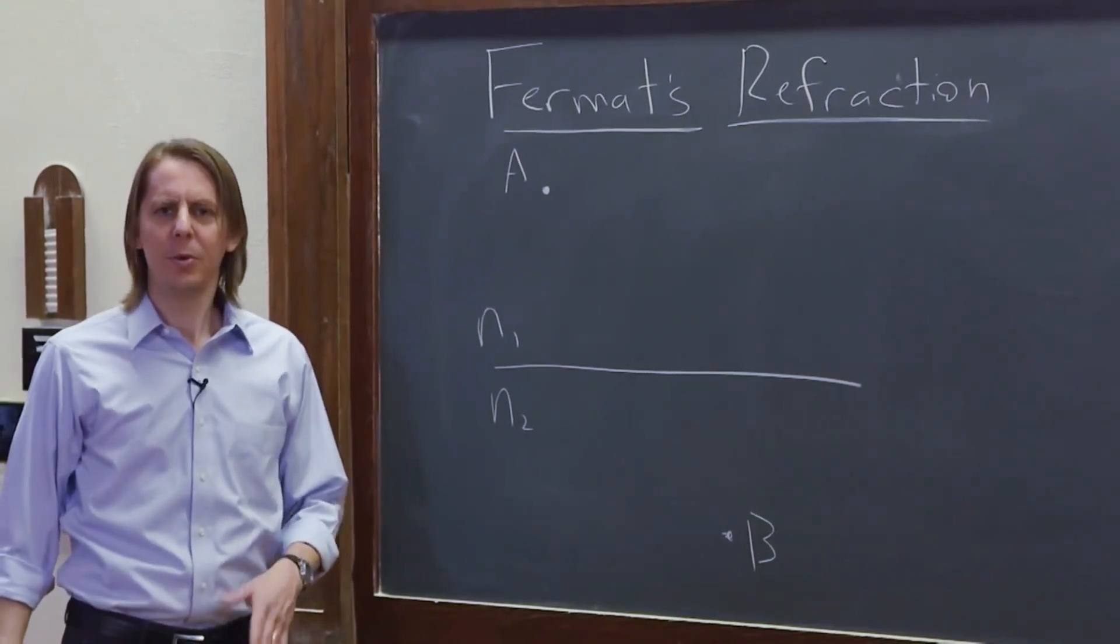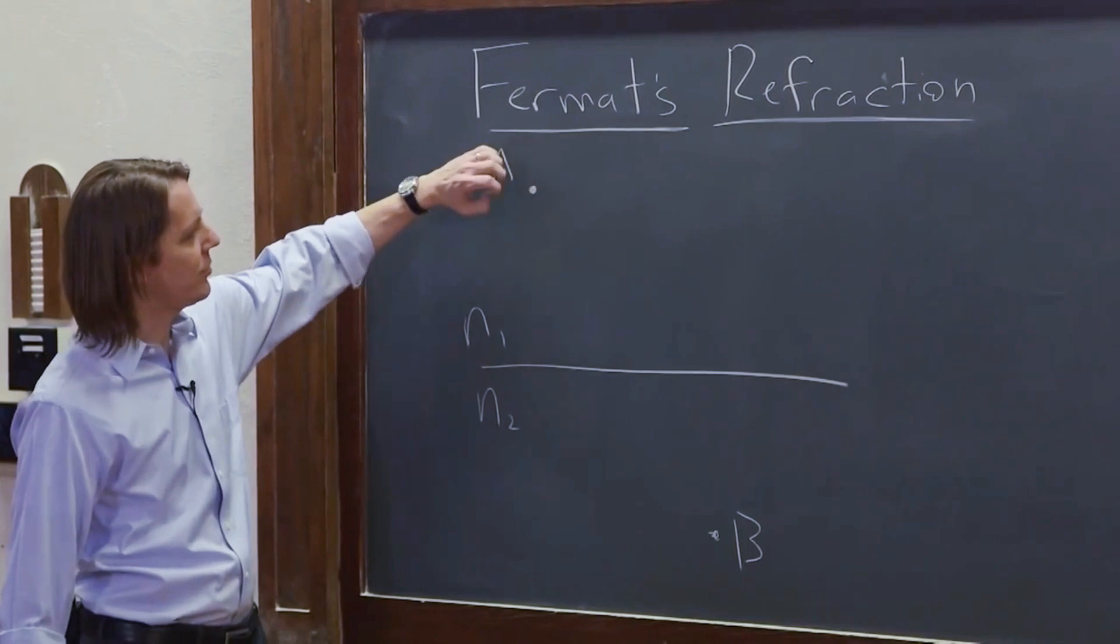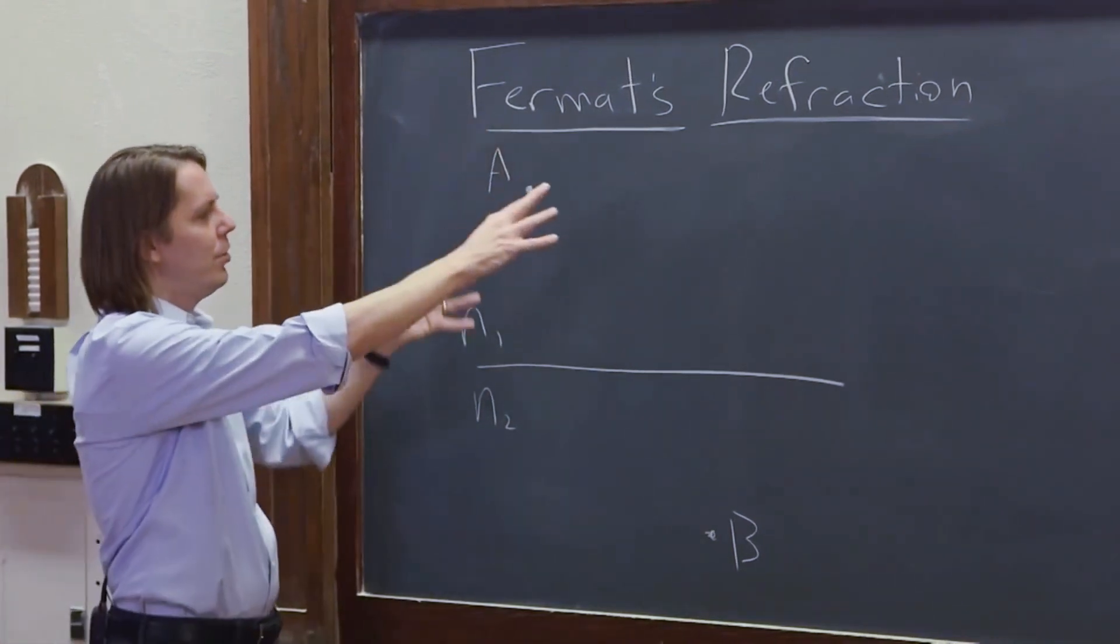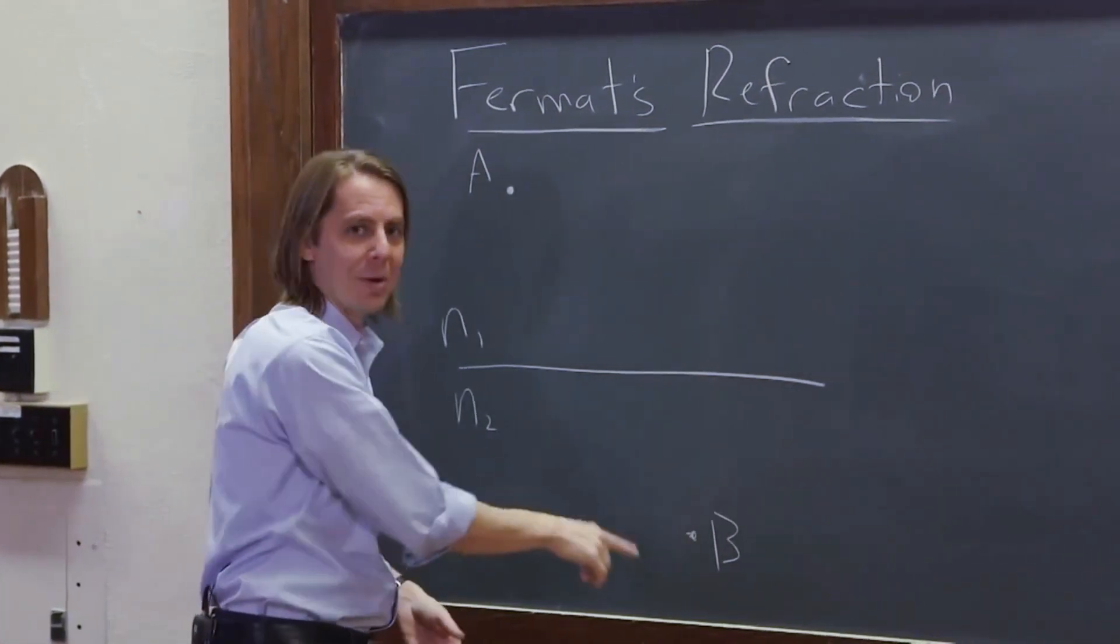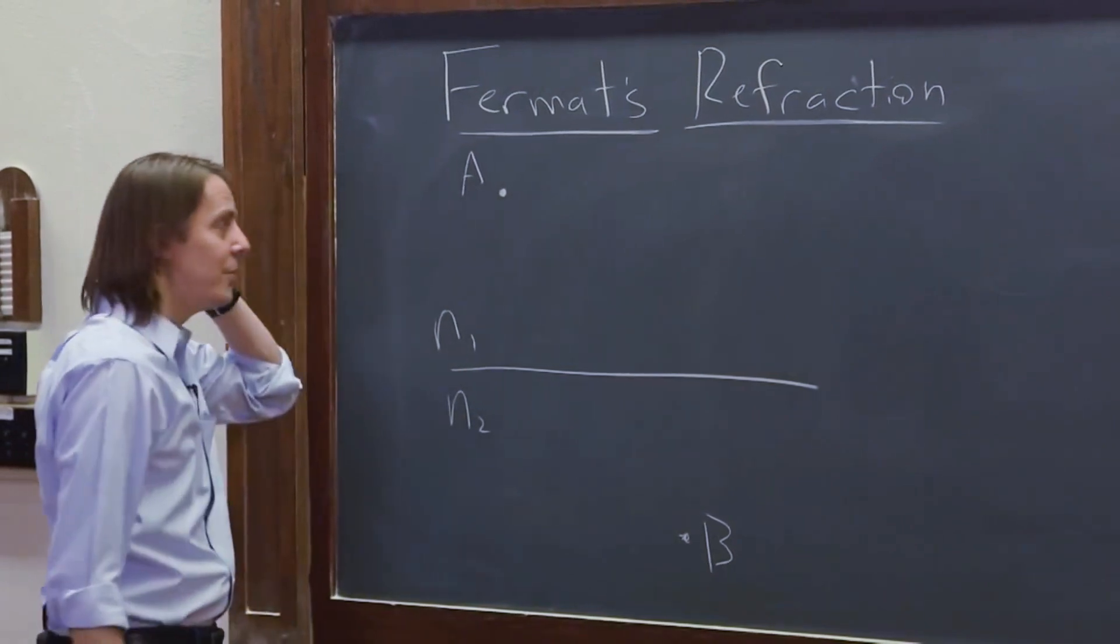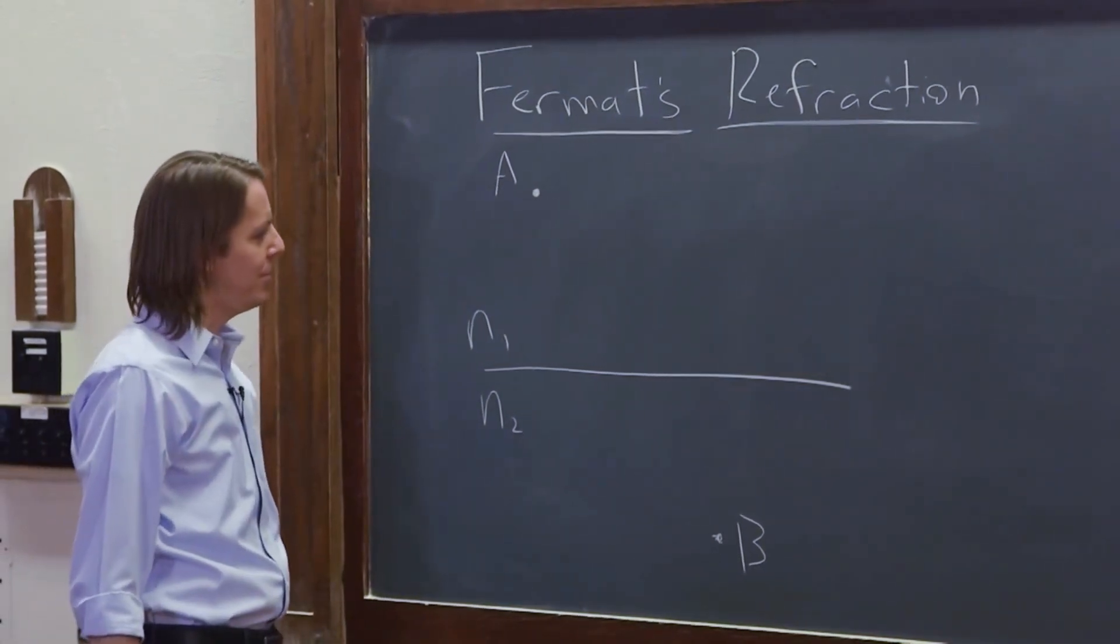So what if the light doesn't want to go there? Well, it will go there. See, if we think of this as a point source, the light's spreading out. The light will go in all directions, and it's got to go somewhere. Somebody has to make it to point B. So there is some path that light will take from point A to point B.